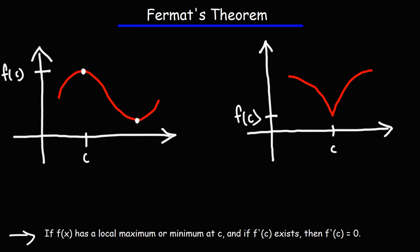So let's focus on the graph on the left. At this point, we have a local maximum. So the first part checks out.